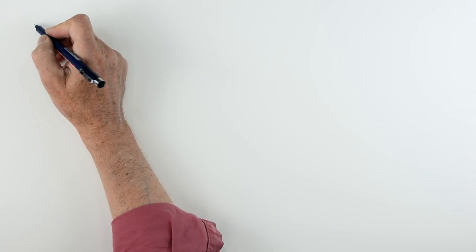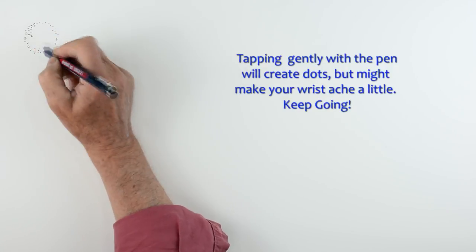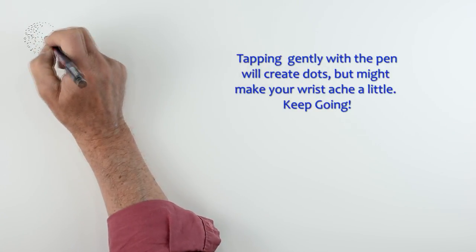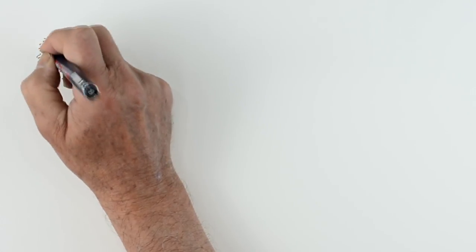We'll start with the dots with the pen and you'll notice I'm simply just sketching out a simple circle shape here and you've got to keep tapping away. It makes your wrist ache a little bit but you've got to keep going. You've got to sacrifice something for your art.